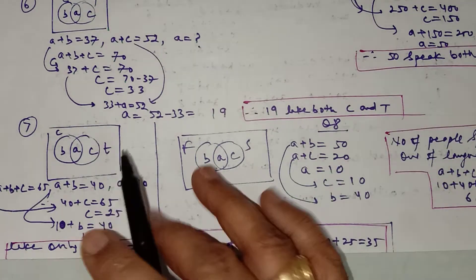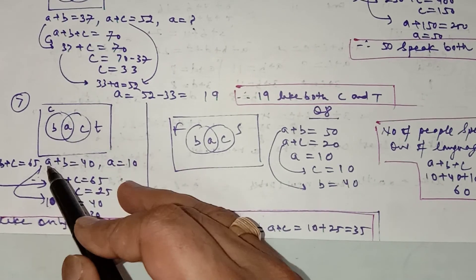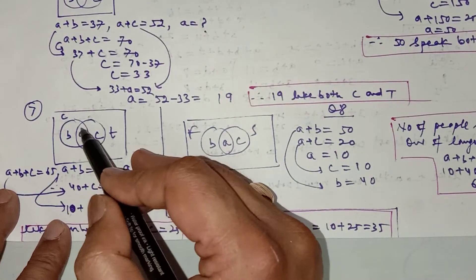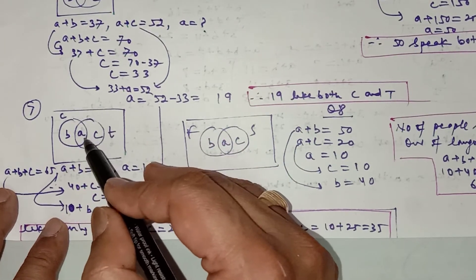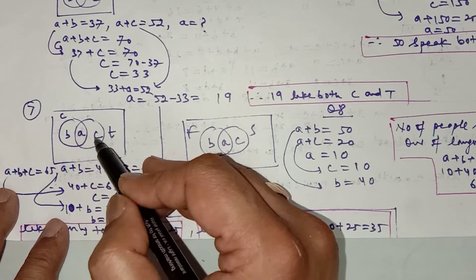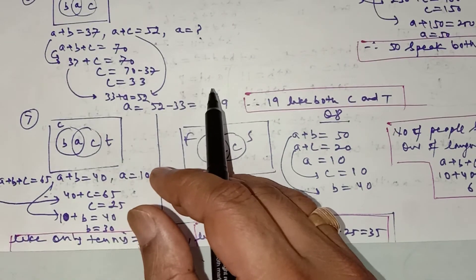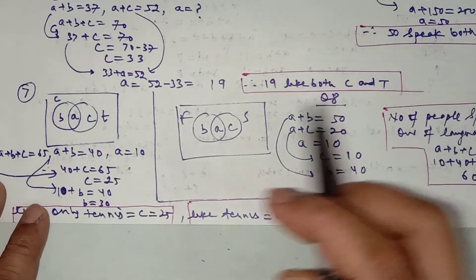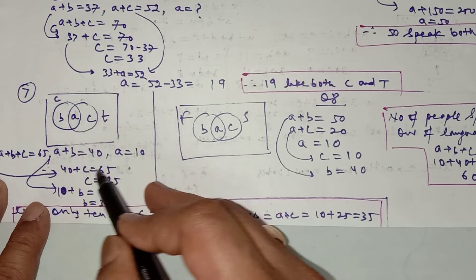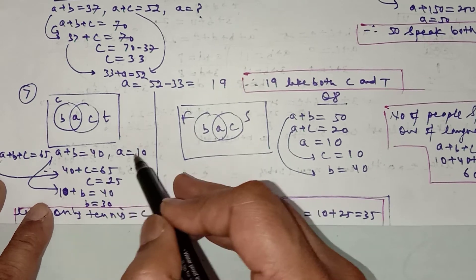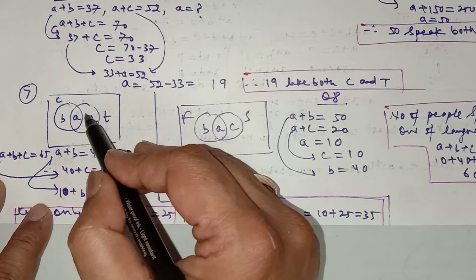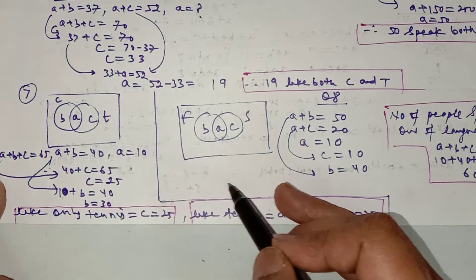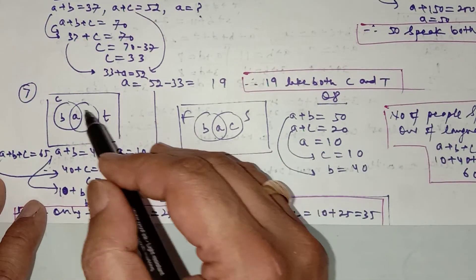In question number 7, in a group of 65 people, 40 like cricket. So a+b+c = 65, a+b = 40 (those who like cricket). You also have a given value and a+c for those who like tennis. What is asked: how many persons like tennis only, and how many like tennis in total. Putting the value of a in a+b gives b; putting a and b gives c — where c means only tennis. The number who like tennis is a+c, and those who like tennis only is c.